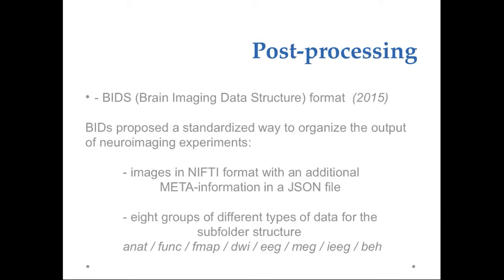I also prepared two slides on the Brain Imaging Data Structure that will be the object of the next presentation. Even if BIDS is not an image file format, what BIDS proposes is a standardized way to organize the output of neuroimaging experiments. The file format used by BIDS is the NIFTY format with an additional JSON file containing some additional metadata. The standard defines eight groups of different types of data subfolders. These groups are anatomy, functional, field map, diffusion-weighted, electroencephalography, magnetoencephalography, intracranial encephalography, and behavior.